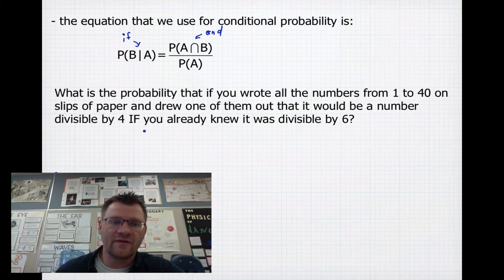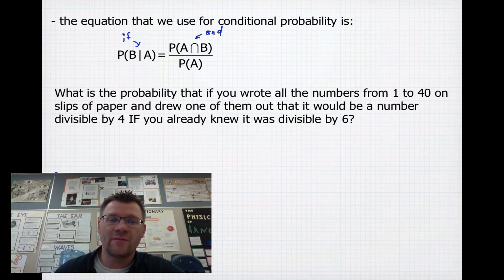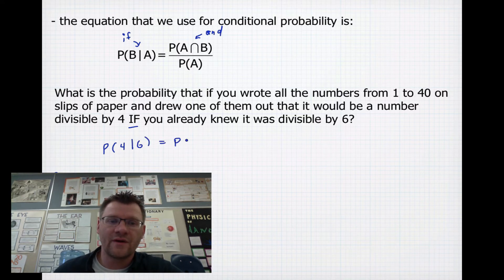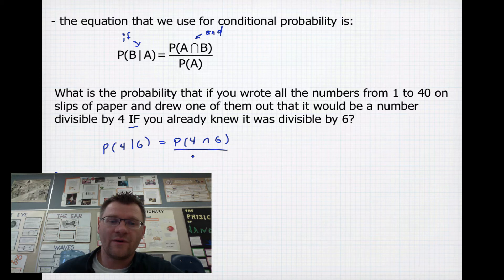Let's use this as an example. What is the probability that if you wrote all the numbers from 1 to 40 on slips of paper and drew one out, it would be divisible by 4 if you already knew it was divisible by 6? We'll write this as: probability of divisible by 4 given divisible by 6 equals the probability of divisible by 4 and divisible by 6, divided by the probability of divisible by 6.